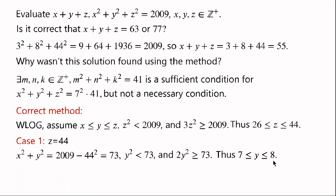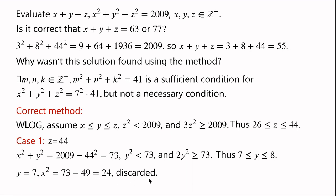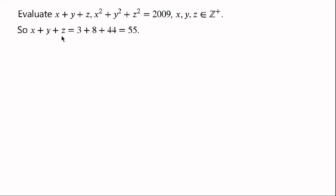When y equals 7, x squared equals 73 minus 49 equals 24; this case is discarded because 24 is not a perfect square. When y equals 8, x squared equals 73 minus 64 equals 9, so x equals 3. Thus x plus y plus z equals 3 plus 8 plus 44 equals 55, and so on.